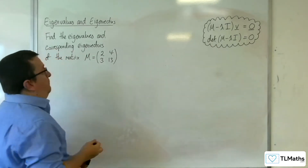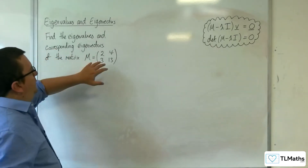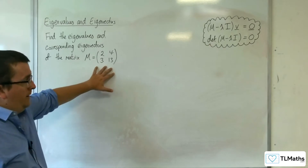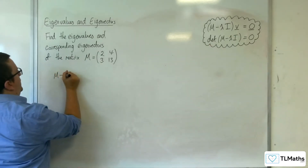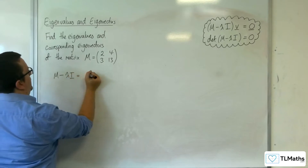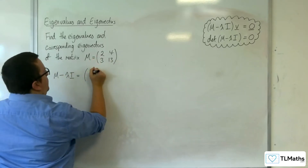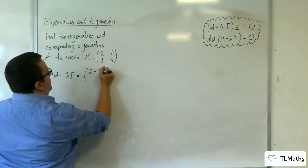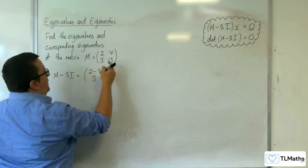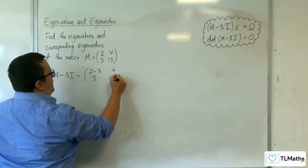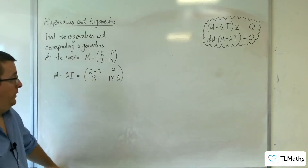So same idea then. We're going to do M take away lambda I. So M take away lambda I is going to be equal to 2 take away lambda, 4 take away 0, 3 take away 0, 13 take away lambda. So that's going to be my matrix.